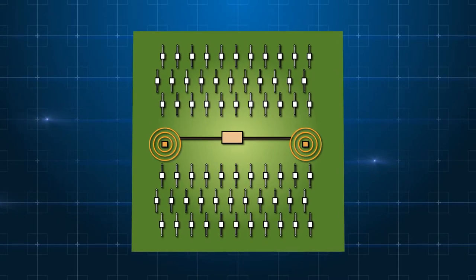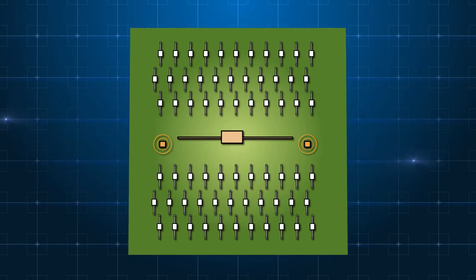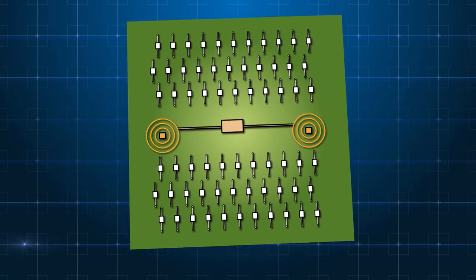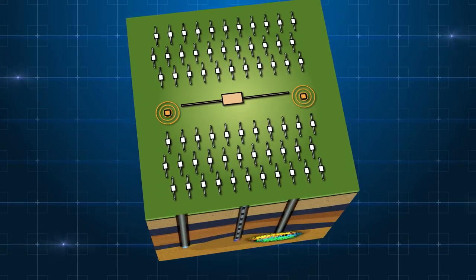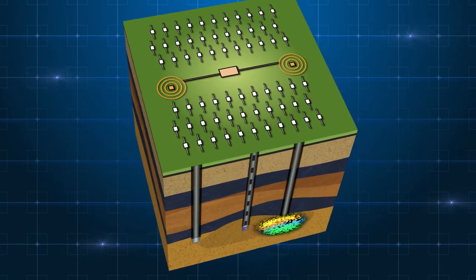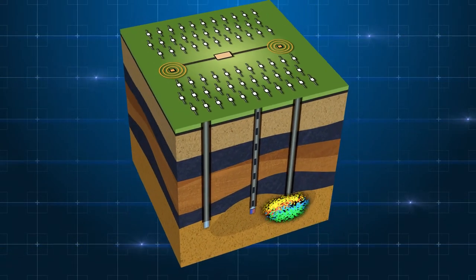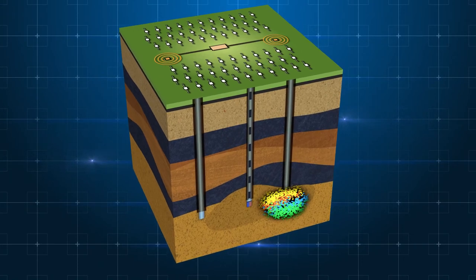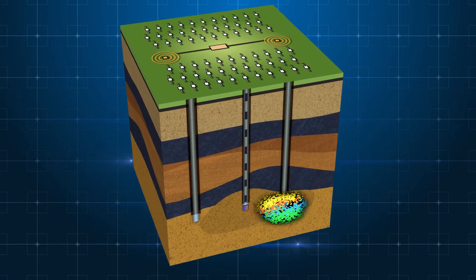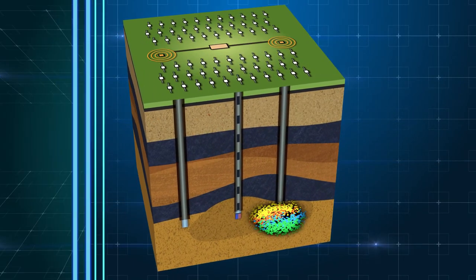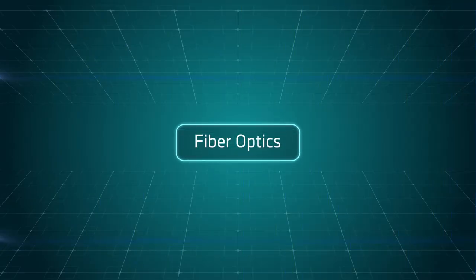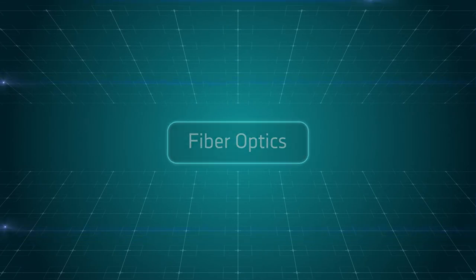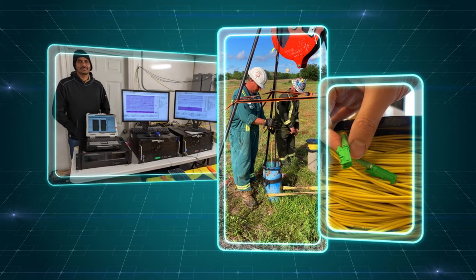Electromagnetics uses sensor arrays deployed across the surface of the injection zone to indicate how gas and fluids migrate within the formation. The resulting data provides visualization of how the CO₂ plume evolves and identifies the boundary between CO₂ and residual oil.